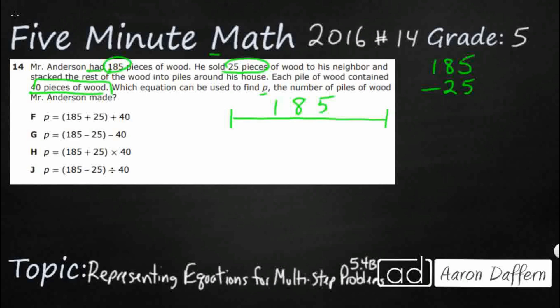25 is probably not going to be that much, so I'm just going to draw a little box right here. I'm going to say he's got 25 gone to his neighbor. So that's going to leave us with 160.